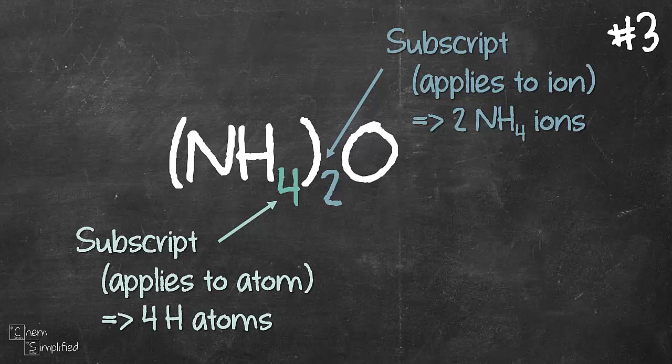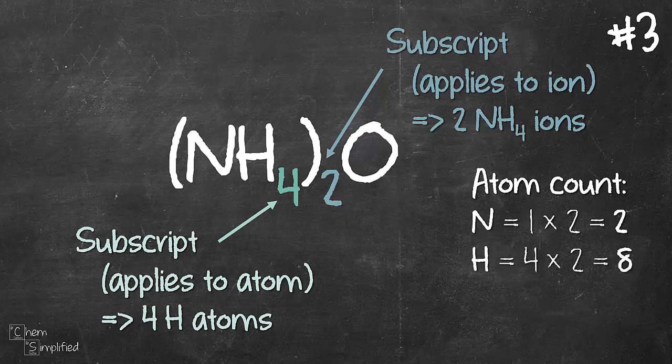So that means we have 2 of that NH4 ion, which is the ammonium ion. So what's our total count? Nitrogen, we have one of it, but since there's a 2 outside of the bracket, we have 1 times 2 equals 2. Hydrogen, we have 4 of it, but because of that 2 outside the bracket, we have 4 times 2. 4 times 2 equals 8.